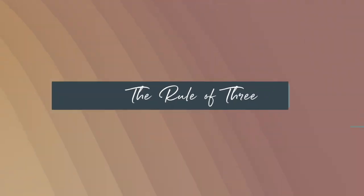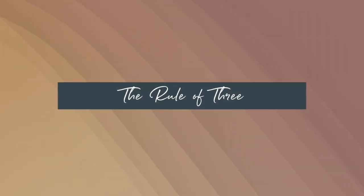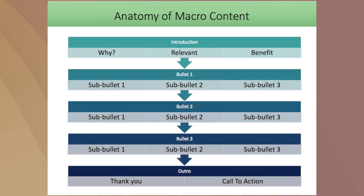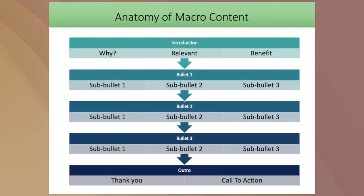When it comes to the outline for the content, I like to follow the rule of three. The rule of three is basically you have your intro and your outro and then the bulk or the body of the content. I follow three high-level bullet points, and then within each one of those bullets there are three sub-bullets — high-level bullet, three sub-bullets, high-level bullet, three sub-bullets.